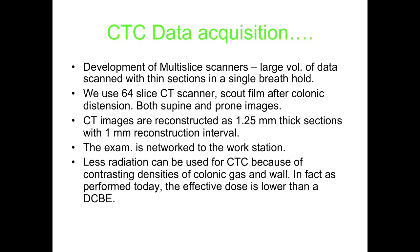For data acquisition we use a 64-slice CT scanner. 64-slice means these are quite fast scanners — in one spin around the body they can create 64 cuts. Not only are the tube and detectors turning around the patient, but the patient is also moving through the scanner, so you get a volume acquisition. CT images are reconstructed with the help of the computer on 1.25mm thick sections with a 1mm gap. You then have axial (transverse) views, coronal (front to back) views, sagittal (lateral) views, and of course the fly-through — all reconstructed from the volume acquired.